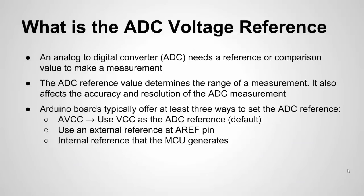What is the ADC Voltage Reference? When you have an analog-to-digital converter, it makes a comparison between an input — say at the A0 or A1 pin — and a voltage reference, and that's how it generates a result. The ADC reference also affects the resolution of a measurement: basically, the lower the reference value, the more resolution you get.